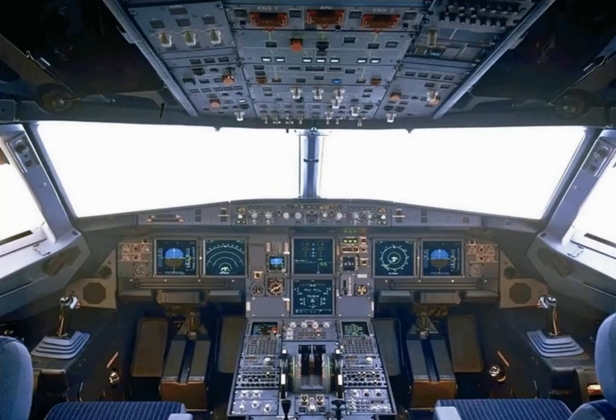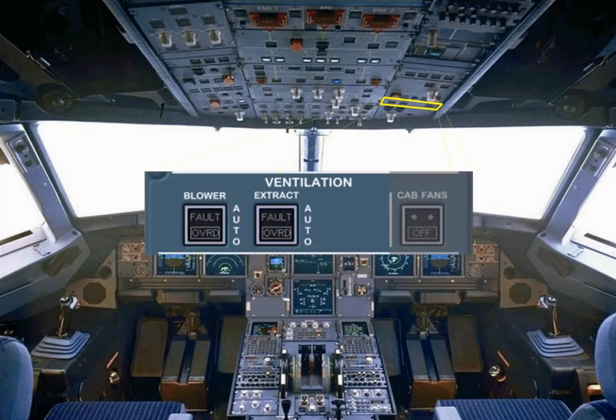On the overhead panel, there is a ventilation panel that contains three push-button switches associated with the ventilation system. During the pre-flight cockpit scan, you should confirm that these switches are in their lights-out position. The avionics ventilation system will then operate automatically and requires no further pilot input.